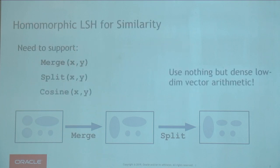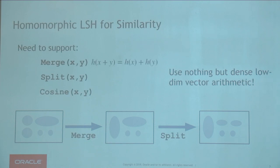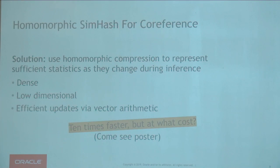As we merge and split these clusters or entities, we want to maintain their hashes efficiently. We propose a homomorphic LSH for cosine similarity — a modification to the SimHash algorithm to support merge and split operations. This allows us, instead of computing from scratch, to use nothing but dense, low-dimensional vector arithmetic to update the hash representations. For example, to merge two clusters X and Y, we can combine their hashes into a representation of the joint cluster. It works well in practice — it's a dense, low-dimensional representation that supports efficient vector updates. We get substantial improvements, but at a cost of accuracy. Please see our poster for details.